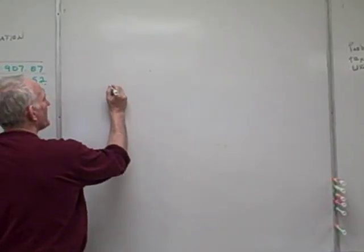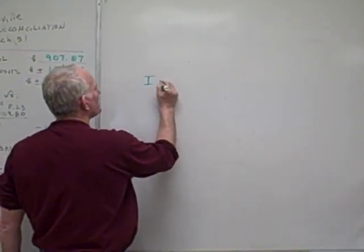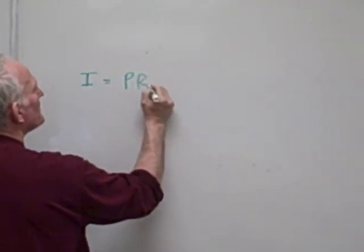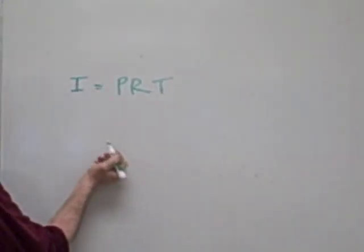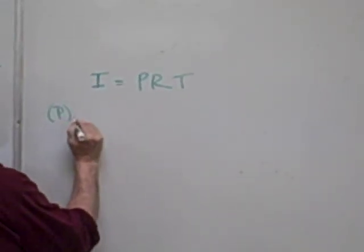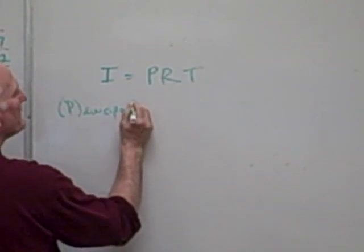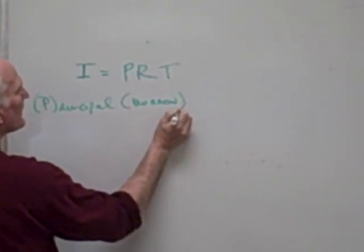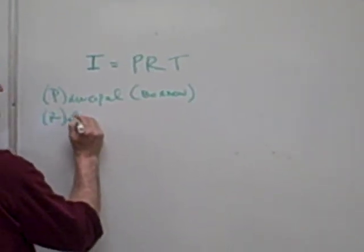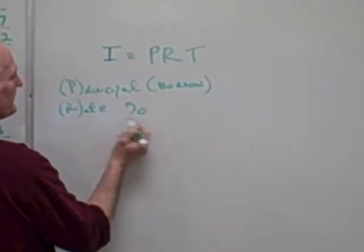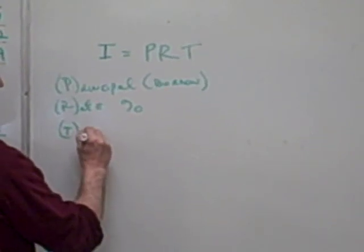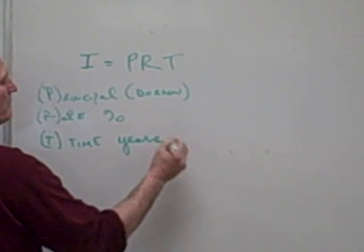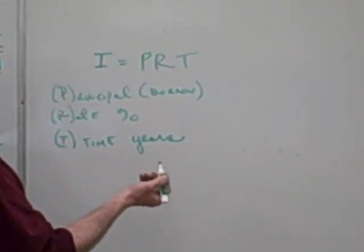Hi, my name is Mike Vladlin and today I'd like to show you how to calculate interest in dollars when given the principal, the rate, and time. The principal, which I call P, is the amount of money that you borrow or receive as a loan. The rate, which I call R, is expressed in percent, and T, which is time, is expressed in years.